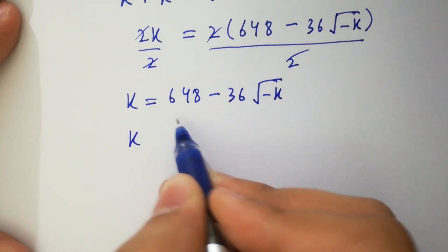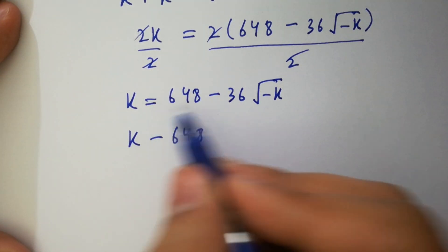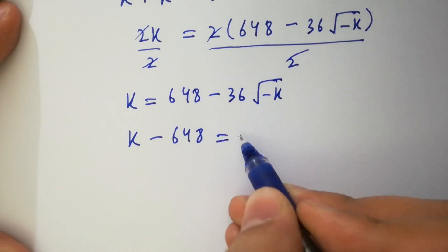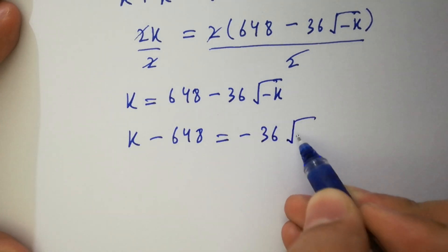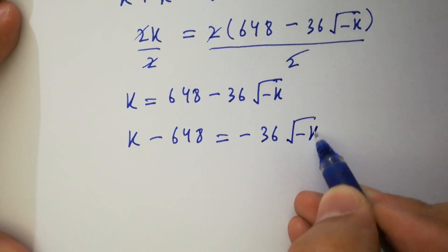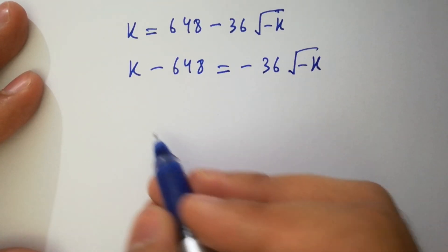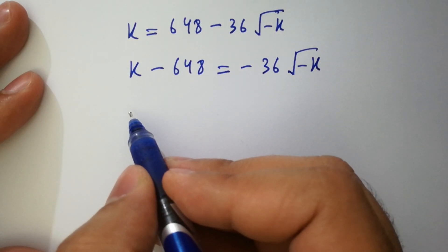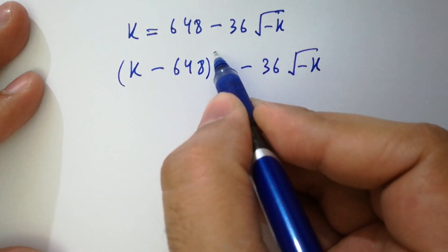Rearranging: k minus 648 on the left hand side equals minus 36 times square root of minus k. In the next step, take square on both sides to solve.